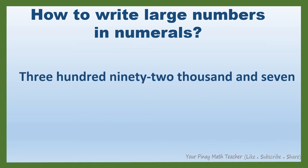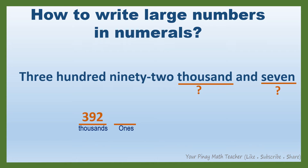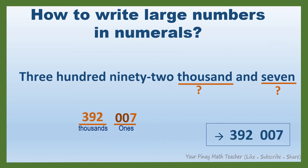Next: 392,007. In this number, the highest period is thousands, so we have two groups of digits. There are 392 thousands. And how many ones? There are seven ones. Since in the ones period we only have one digit — seven — we need to add two zeros before seven. So, this is the numeral for 392,007.